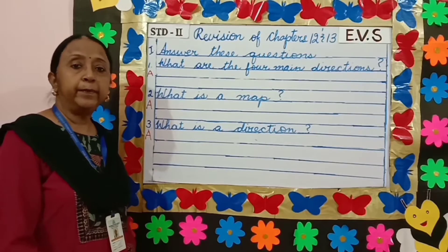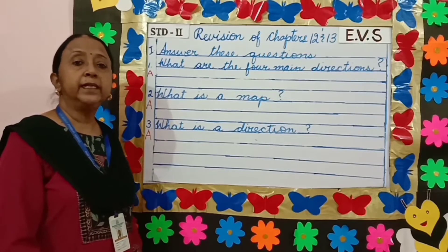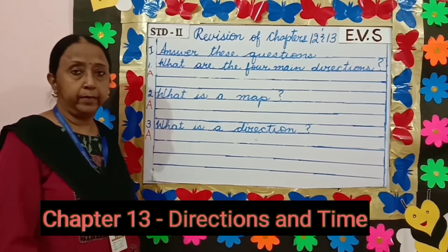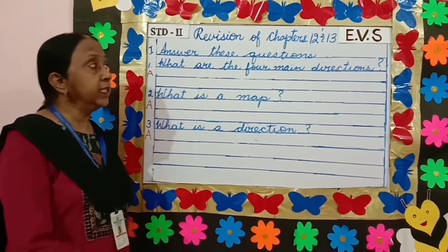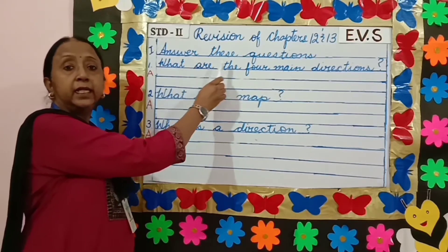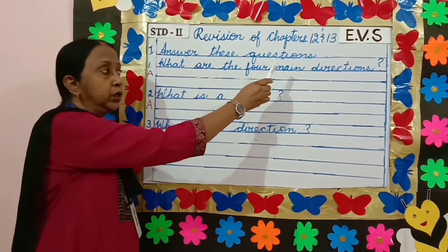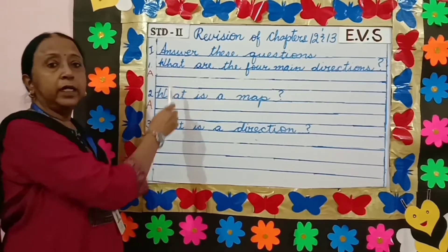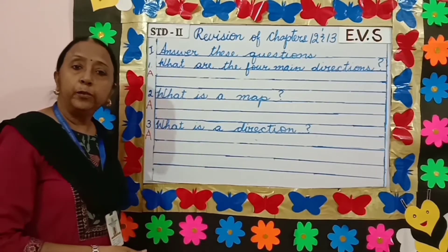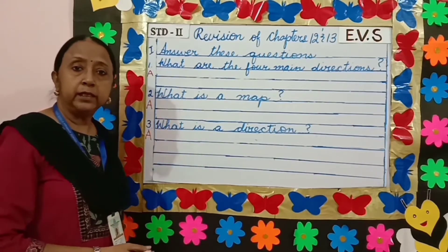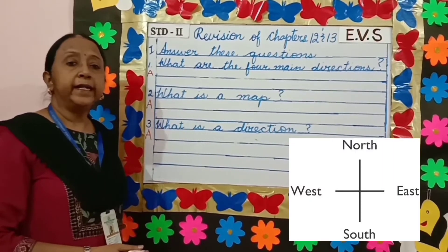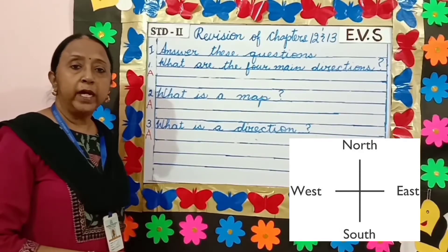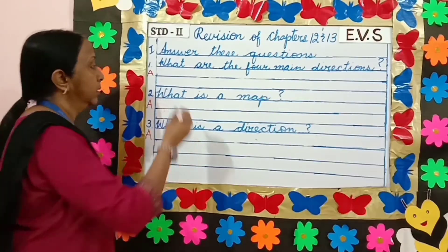Our next chapter is chapter 13: Direction and Time. The first question is: answer these questions. What are the four main directions? The four main directions are east, west, north and south.